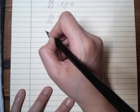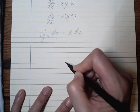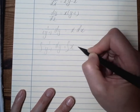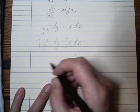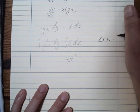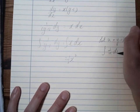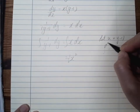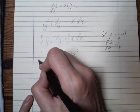Then we integrate both sides. The right side is straightforward: we get one half x squared. For the left side, because it involves a natural log, we let u equal y minus 1, so it becomes 1 over u du. Since du/dy equals 1, the substitution works out cleanly.